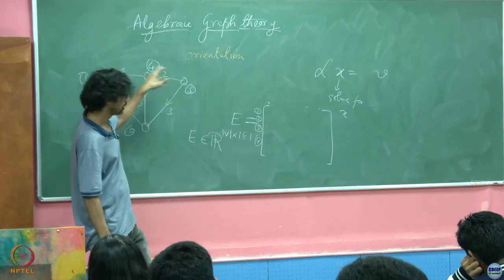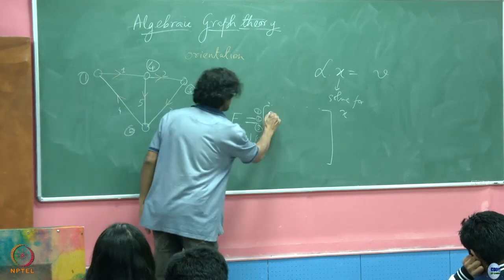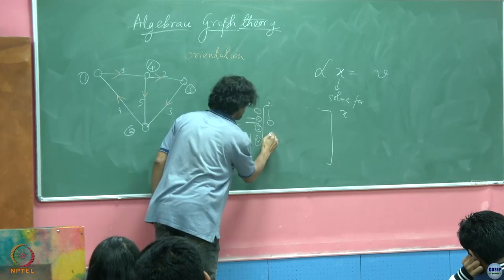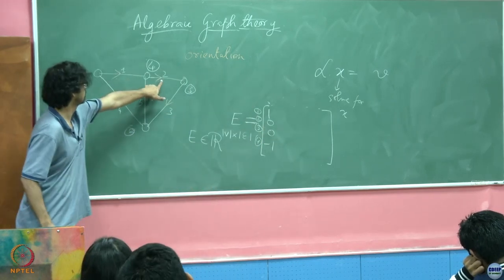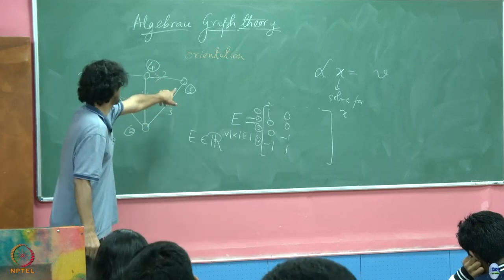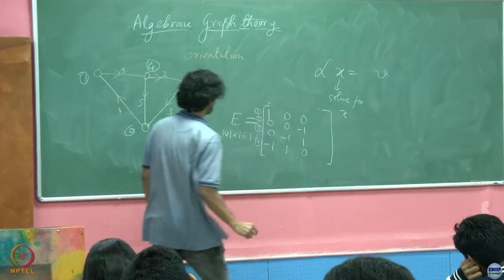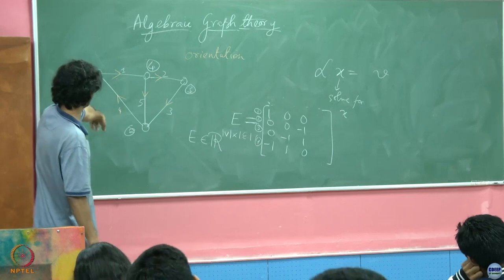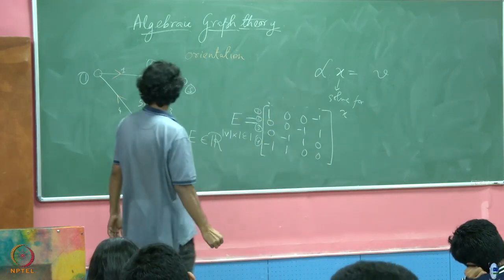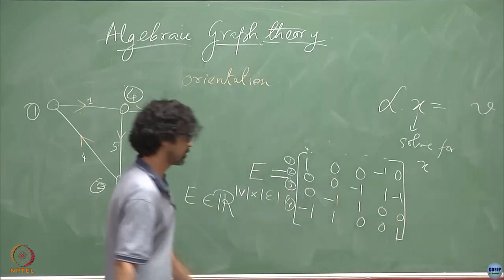Once I have given an orientation, the incidence matrix is fixed. For edge 1, the first column: it starts from vertex 1, so I write 1 in the first position; it terminates at vertex 4, so I write minus 1 in the fourth position; the rest are 0s. Similarly, the second edge starts at 4 and ends at 3; the third starts at 3 and ends at 2; the fourth goes from 2 to 1; and the fifth starts from 4 to 2.